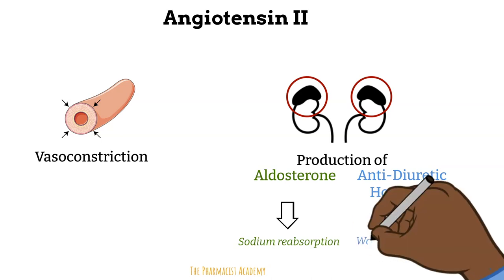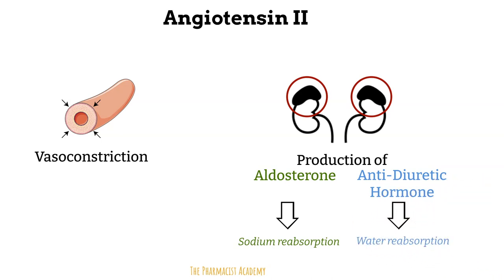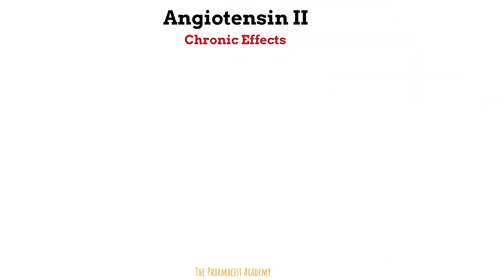This will increase the blood volume again, which then increases blood pressure. And as we all know, wherever sodium goes, water follows — so that's when antidiuretic hormone comes into play. These functions of angiotensin 2 provide a quick, immediate fix for the reduced blood flow to the kidneys. But angiotensin 2 takes things way too personal — even though it fixed the problem right away, it also has chronic effects that take some time to fully kick in and are meant to fix the problem long-term.